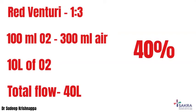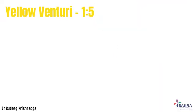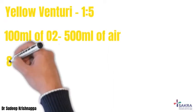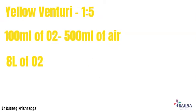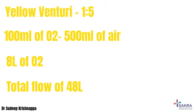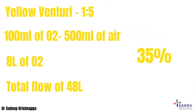The yellow venturi has an entrainment ratio of 1:5. For each 100 ml of oxygen flowing through the device, another 500 ml of room air is entrained, giving a total volume of around 600 ml. With the recommended flow rate of 8 liters of oxygen, 40 liters of room air are entrained, giving a total flow of around 48 liters. In the 600 ml mixture: 100 ml of oxygen contributes 100 ml, and 500 ml of air contributes another 100 ml of oxygen — totaling 200 ml of oxygen in 600 ml, which translates to an FiO2 of 35 percent.